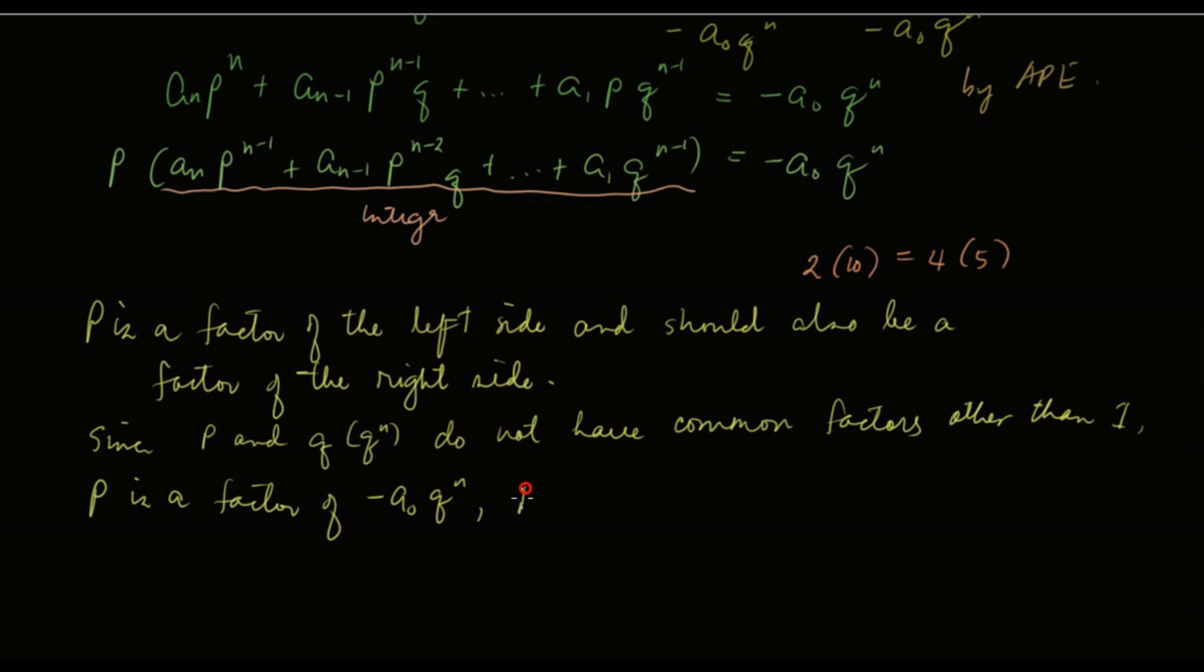So p must be a factor of a sub 0. And that proves the second part of the rational root theorem.